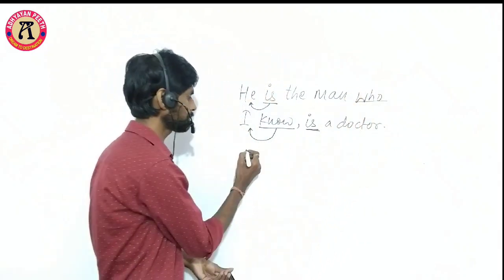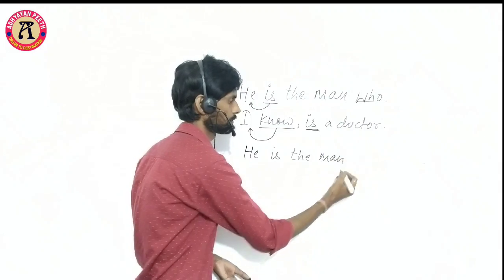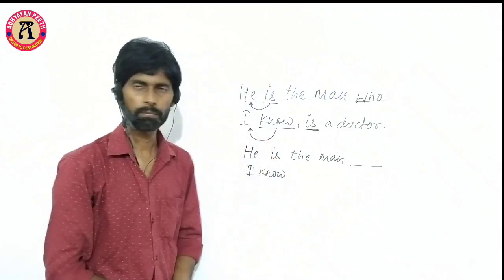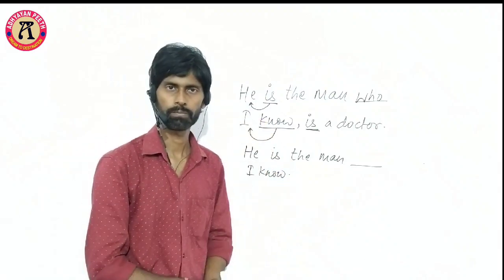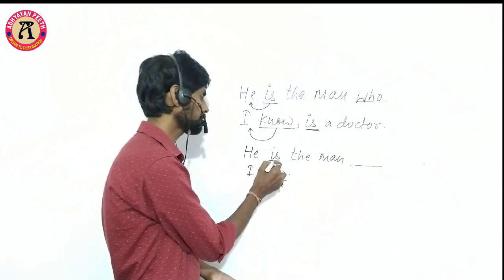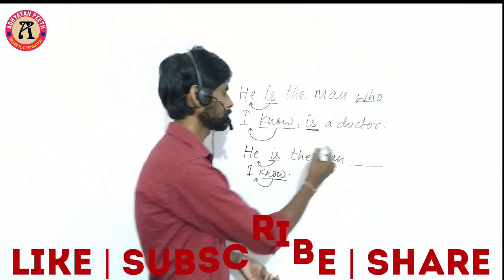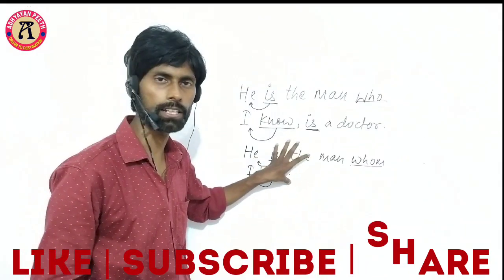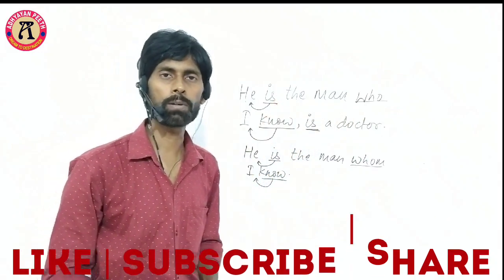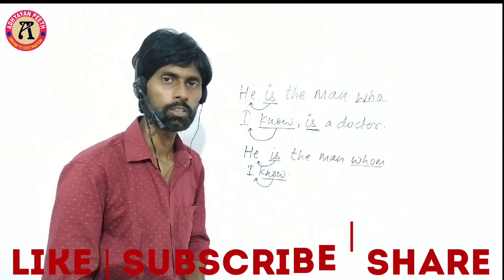Now take the same sentence: 'He is the man... I know.' In this version there are only two verbs, and the subjects of both verbs have been found. If there is no verb left without a subject, then we use whom. So: if all verbs have found their subjects, use whom. If any verb has not found its subject, use who.